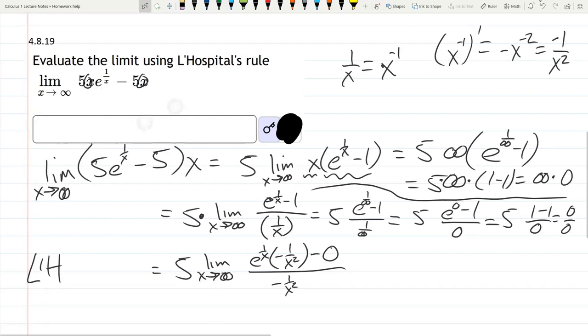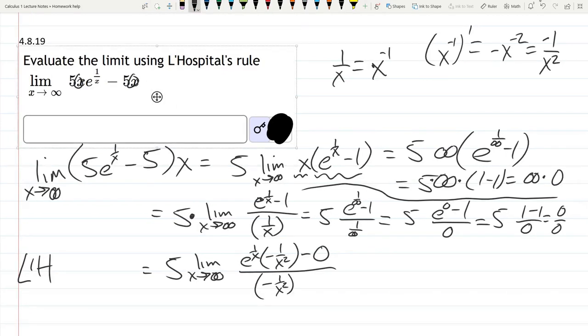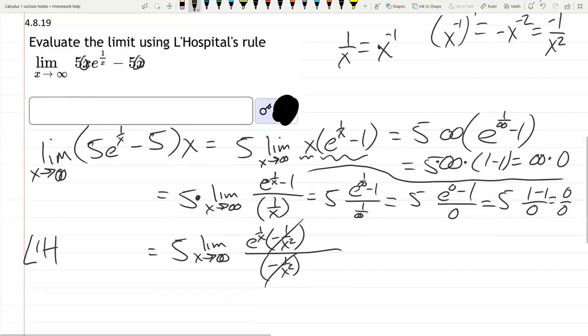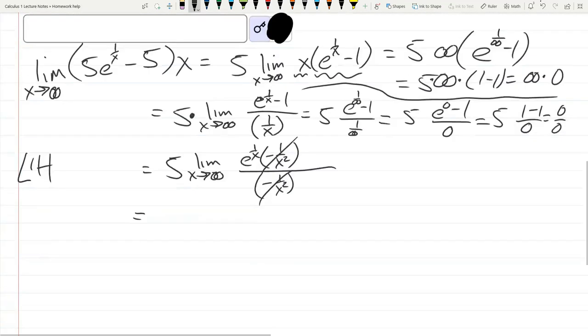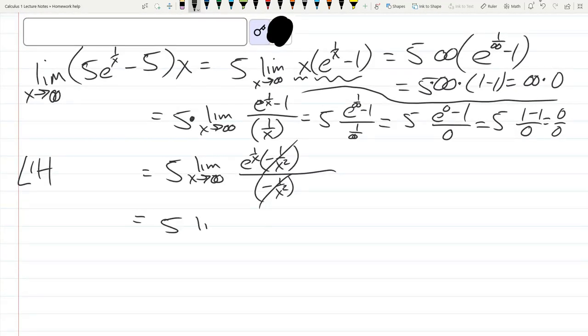Now from here, you can just cancel out that minus 0, it doesn't matter. So I'm going to erase it. Now we have this -1/x^2 as a factor, canceling the other factor. And we have 5 lim(x→∞) e^(1/x).